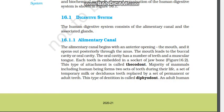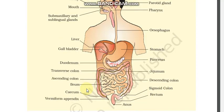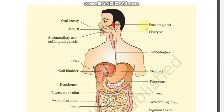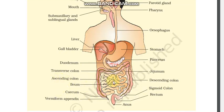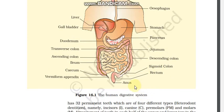In an adult human, the alimentary system includes: oral cavity, mouth, parotid gland, submaxillary and sublingual glands, pharynx, esophagus, stomach, liver, gallbladder, diaphragm, duodenum (C-shaped), pancreas, transverse colon, ascending colon, descending colon, jejunum, ileum, cecum, vermiform appendix, and rectum.